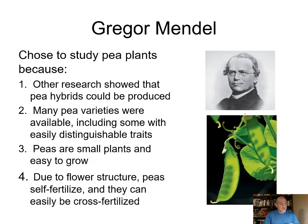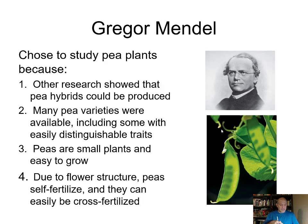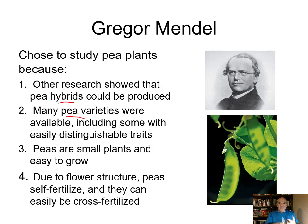Along comes Gregor Mendel — a monk in a monastery with science and mathematical background, influenced by physicists who used mathematics to describe natural phenomena. While in the monastery, the monks were growing peas, which were easy to study. Mendel chose peas because prior studies showed peas could produce hybrids, there were many varieties with different colors, sizes, and other traits, and they were relatively easy to grow.